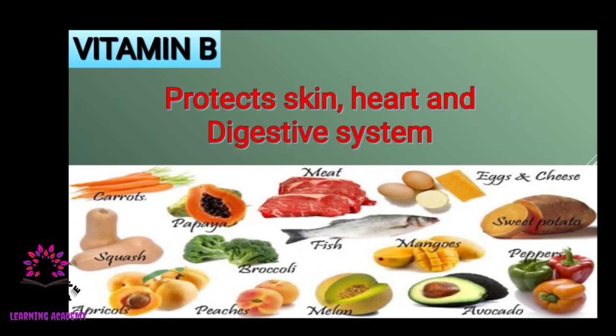Vitamin B is found in wheat, ragi, black gram, greens, and germinated grains. Vitamin B protects our skin, heart, and digestive system.